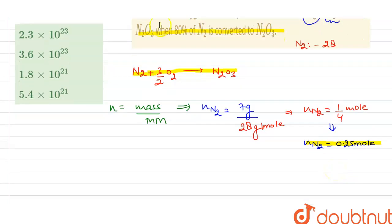Now, it has been given that 80% of N2 is converted to N2O3. So we have to find 80% of 0.25 mole, which equals 0.2 mole of N2.